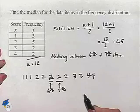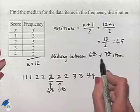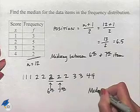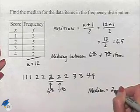And since the median is supposed to be midway between the sixth and the seventh item, and they're both 2s, then our median is also, in this case, equal to 2.